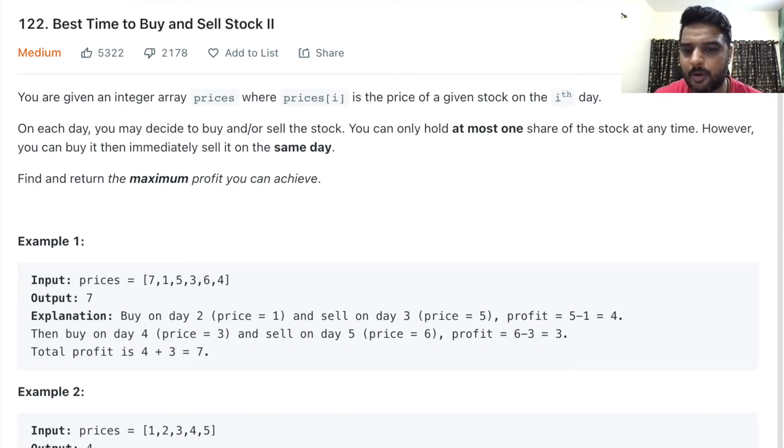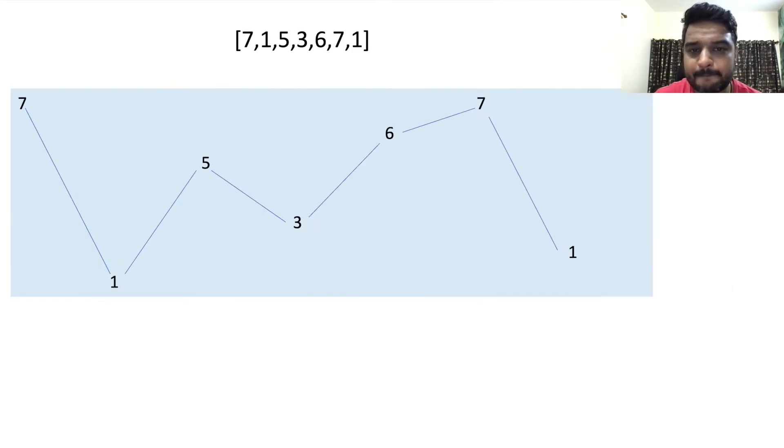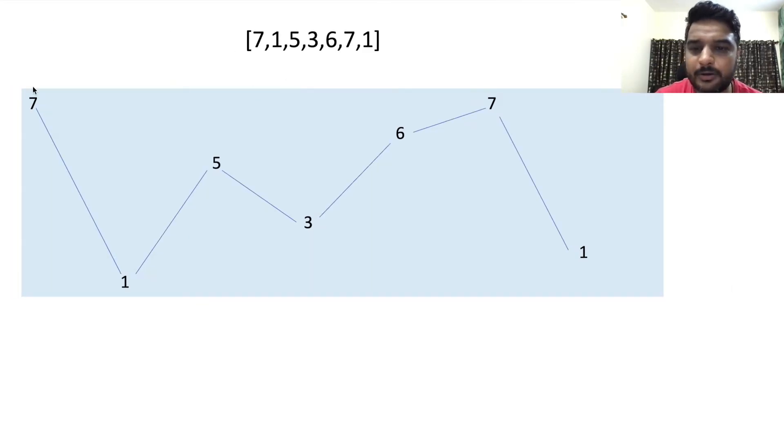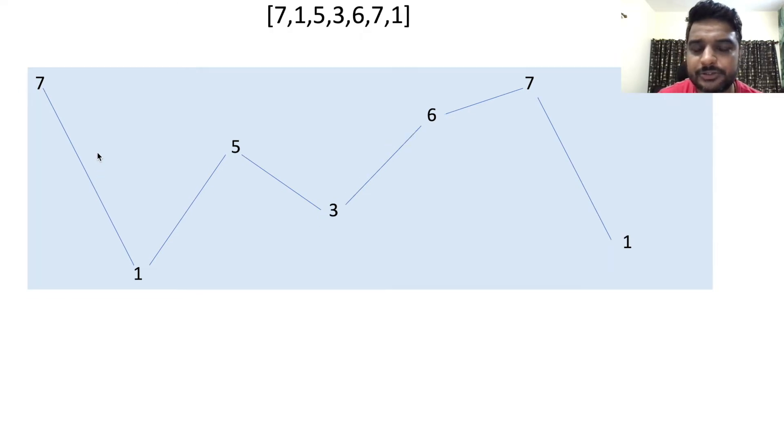The problem statement is clear. Let's try to understand this with an example. Here I have plotted this in a graphical view to understand the solution better. We can see the price is initially 7, then 1, then 5, then 3, then 6, then 7, then 1.